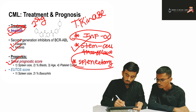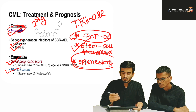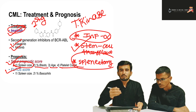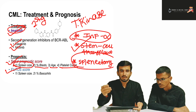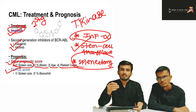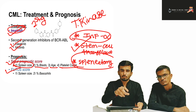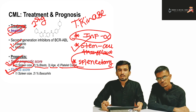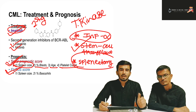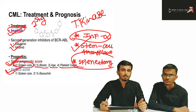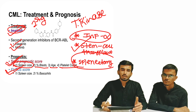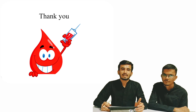For prognosis, the Sokal and EUTOS prognostic scoring systems are followed. These assess spleen size, blast cell number, age, and platelet count. Patients are monitored every three to six months with ultrasound and blood cell picture to evaluate treatment effectiveness. This was the complete integrated discussion of Chronic Myeloid Leukemia by me and my friend Ankit. Thank you and keep studying!